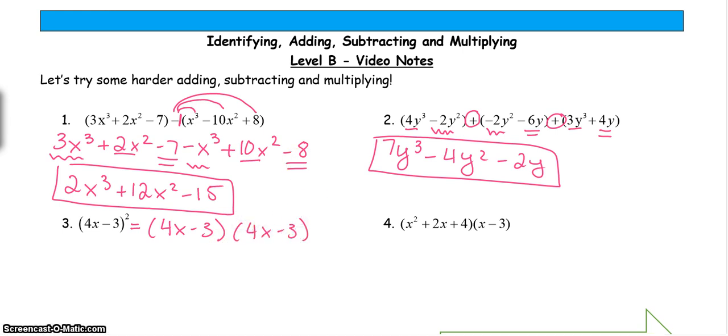Now that I've rewritten it, I can multiply. So 4x times 4x is 16x². 4x times -3 is -12x. -3 times 4x is -12x. And -3 times -3 is 9.